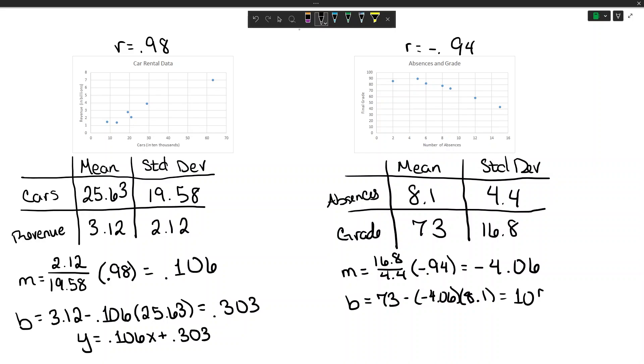This gives me a value of about 105.89. So for this one my line would be y equals negative 4.06x plus 105.89.